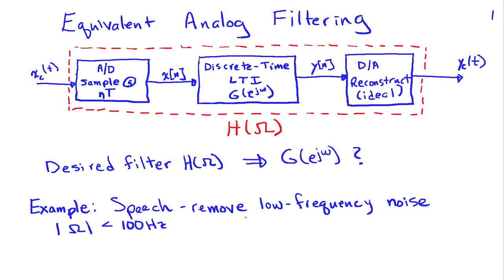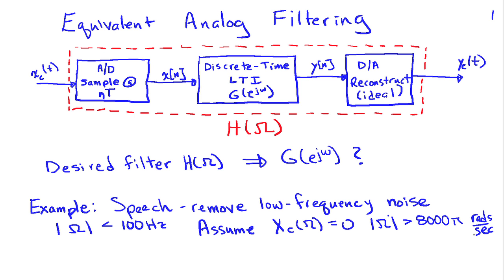As a concrete example, suppose I have speech and I want to remove low-frequency noise — specifically frequencies less than 100 Hz. I want to generate a high-pass filter that passes signals above 100 Hz. For this example, we assume the speech signal is band-limited to 4 kHz, corresponding to 8,000π radians per second, and a sampling frequency of 10,000 Hz or 10 kHz — satisfying the sampling theorem. The question is how to choose the discrete-time filter G(e^jω) to implement this high-pass characteristic.